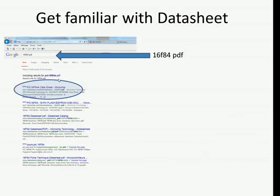The next step is getting familiar with the datasheet. The easy part is getting it: just Google the PIC number — I'm using the 16F84 here. A little trick: add a space and 'PDF' in your search, and that will show you the actual PDF datasheet directly. If you don't do that, it'll likely bring you to a datasheet catalog that might try to download software you don't need. So make your life easy — add 'PDF' and download directly.